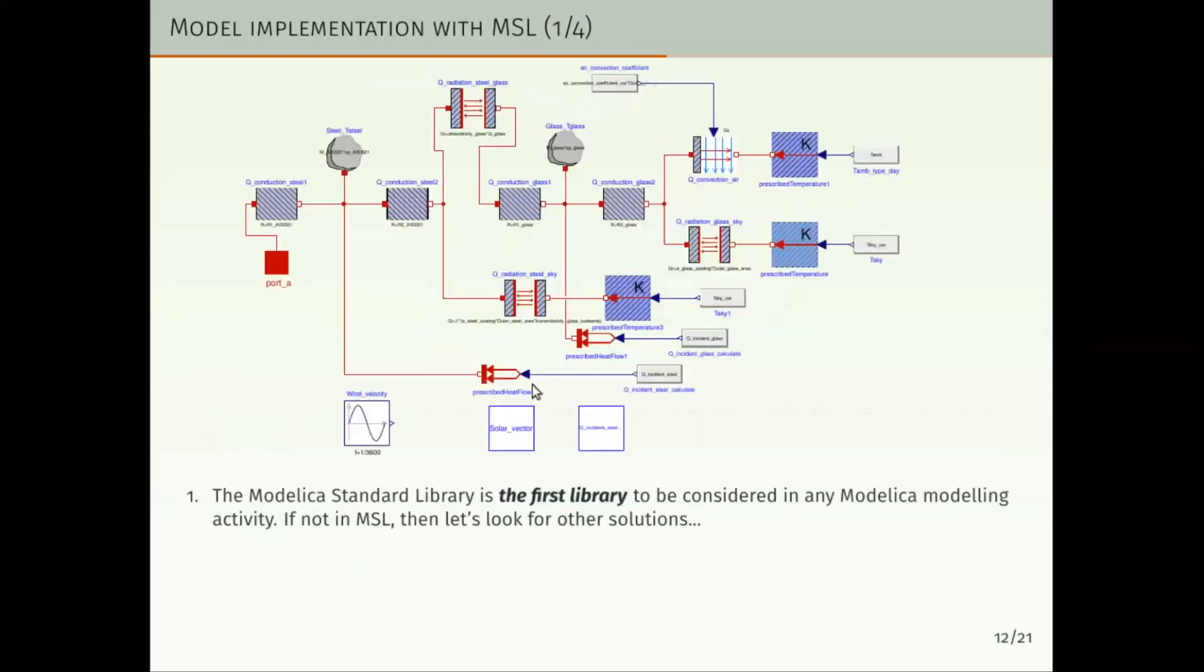For the implementation, our approach has been to use the Modelica Standard Library as the first library to be considered in any Modelica activity. If we do not find the proper class model in the Modelica Standard Library, then we begin to look for other solutions. In this figure we can see most of the components of the model that we have implemented. We have used mostly the classes in the sub-package heat transfer from Modelica Thermal, according to the phenomena involved: conduction, here we have conduction components; convection, this and all in the convection network that is connected here; and radiation, here and here.